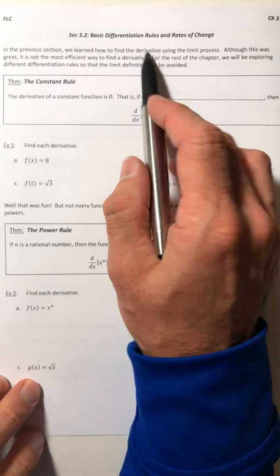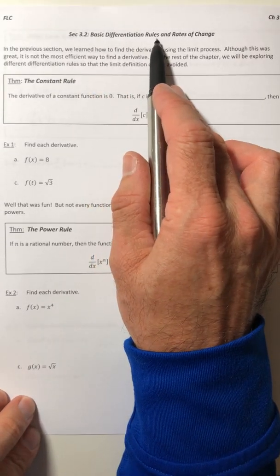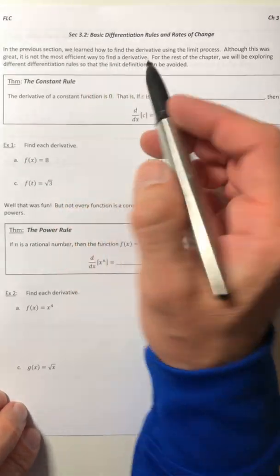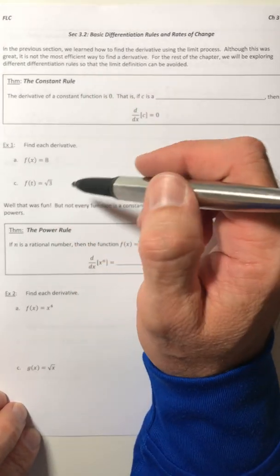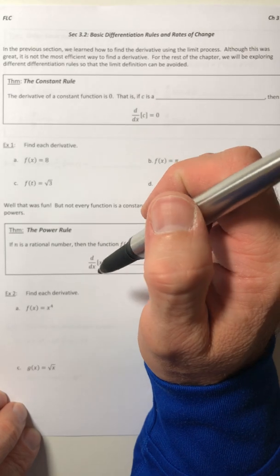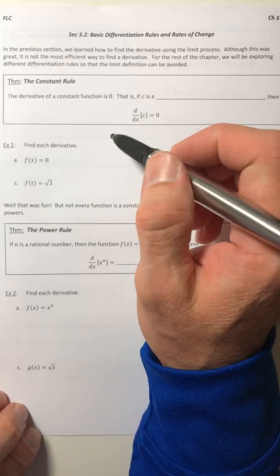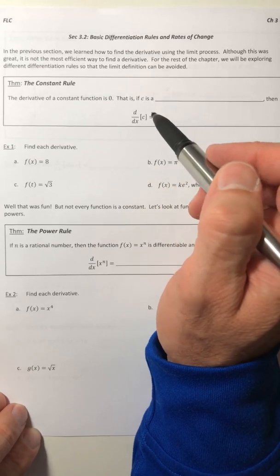We're going to look at just basic differentiation rules and then at the end, rates of change. In the last section, we looked at how to find the derivative using that limit process. Although we could do it, it's not the most efficient way to find a derivative.